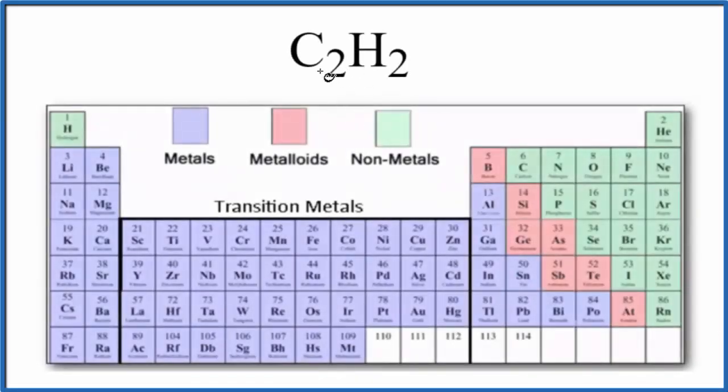In this video we'll answer the question whether C2H2 is ionic or covalent. C2H2, that's acetylene, also called ethion.